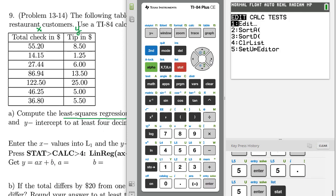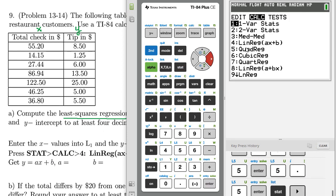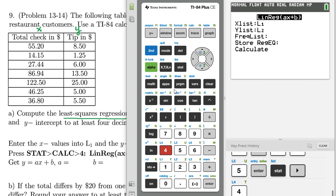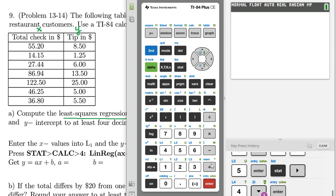So go to STAT, CALC, and then option 4, which is linear regression. Again, making sure that diagnostics are turned on and make sure you've got x list is list 1, y list is list 2, highlight calculate, press enter.